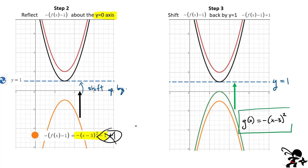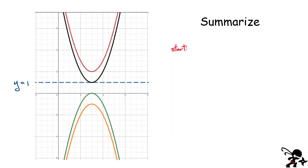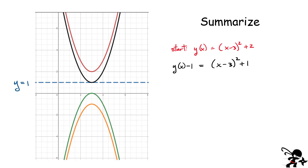That is how you do a reflection about any axis — in this case y equals 1. Let's summarize. We started with our function, the simple parabola x minus 3 squared plus 2 — that was the red curve. The next thing we did was take the difference between the red curve and the axis of symmetry: f of x minus 1. This gave us the black curve x minus 3 squared plus 1.